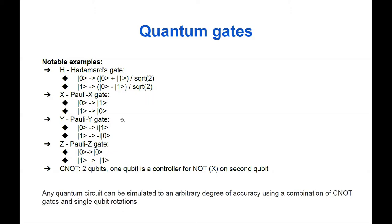There is also one two-qubit gate called CNOT, which is a very important example. In the CNOT gate we introduce entanglement between two qubits — one qubit can be controlled by another. Depending on the value of the control qubit: if it is 1, we apply a NOT operation on the second qubit; if it is 0, we don't. It's important to note that any quantum circuit can be simulated to an arbitrary degree of accuracy using a combination of CNOT gates and single qubit rotations.